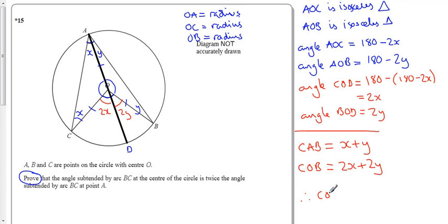Therefore, COB is equal to, it is twice as big as CAB. Done. You have to put all the information down that you've used, step by step.